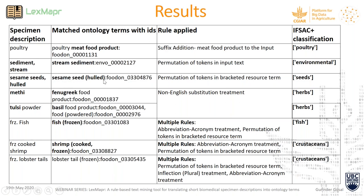Arbitrary ordering in the input is being captured, as is arbitrary ordering on the ontology side. Non-English language substitution is being done to map specimen descriptions to ontology terms. We observe that it is not only a single treatment or rule making a mapping possible — it is actually multiple treatments and multiple rules that have to be applied for a single specimen description to map to ontology terms.